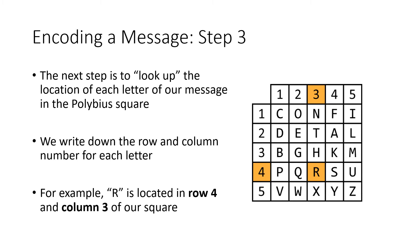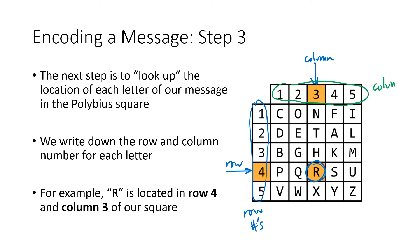Now we use the square. We take every letter in our message and look it up in the square. The first letter of 'retreat' is R — it's in row four, column three. We always go row first, then column. We write those numbers vertically on top of each other. So for the message 'retreat X,' R gives us row 4, column 3; E is row 2, column 2; T is row 2, column 3; and so on.